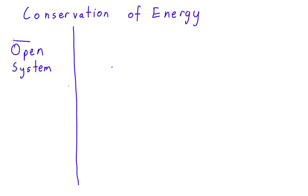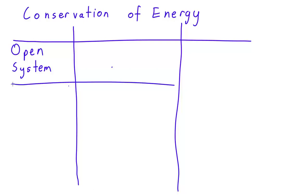There are three types of systems that we tend to look at in physics. The first is what we call an open system. In an open system, matter and energy are free to flow into or out of the system.